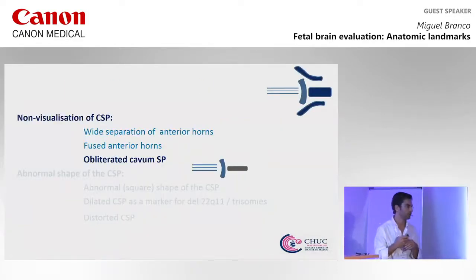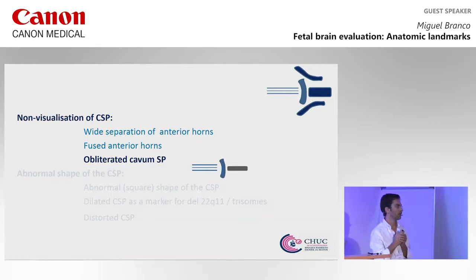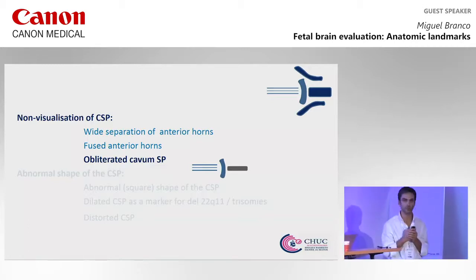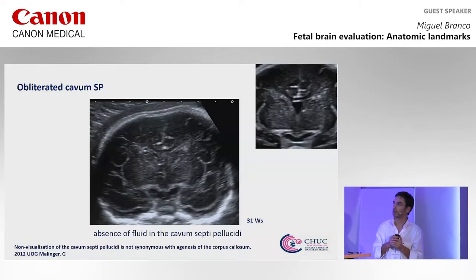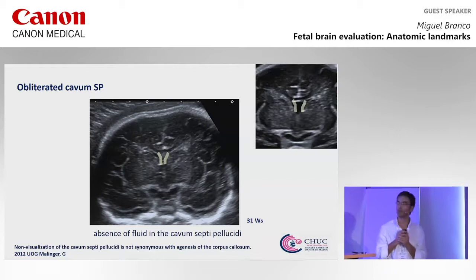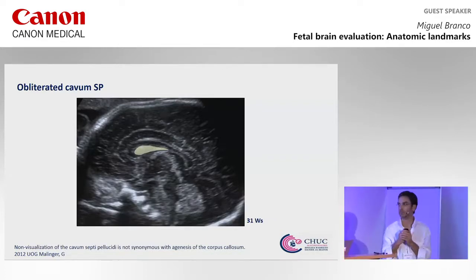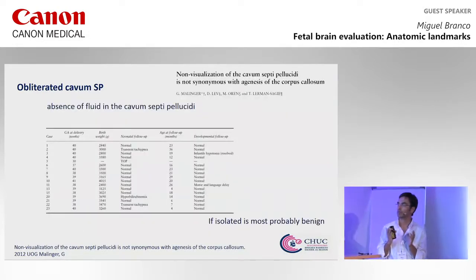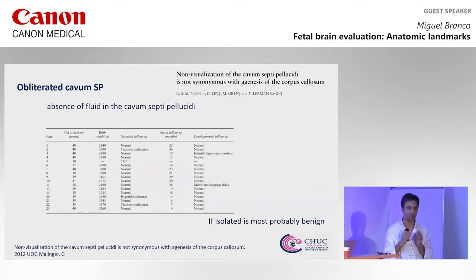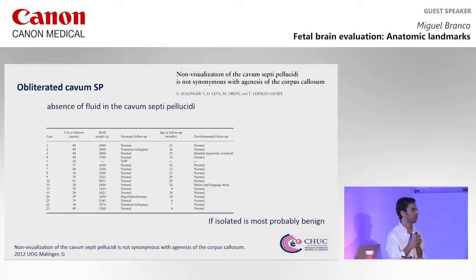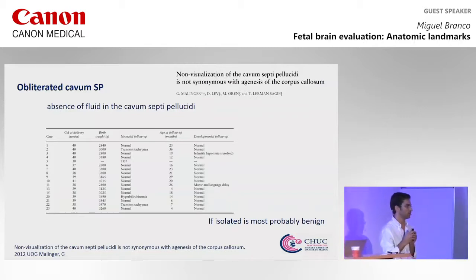Now we come to the last of this group: we are not able to identify the cavum septum pellucidum because it is obliterated. Here we are able to identify the two leaflets and the two septa, but no fluid inside. Sometimes the cavum Vergae is patent. Absence of fluid in the cavum septum pellucidum, if isolated and if everything else is normal, is probably a benign situation as described by Malinger in 2012.